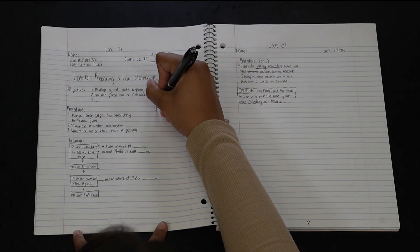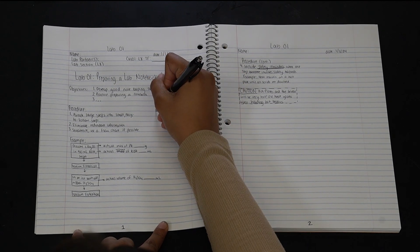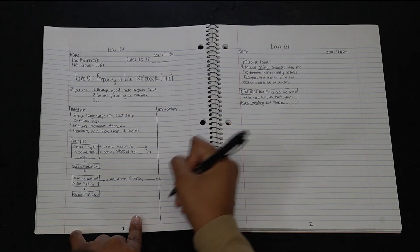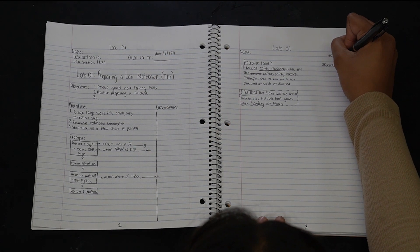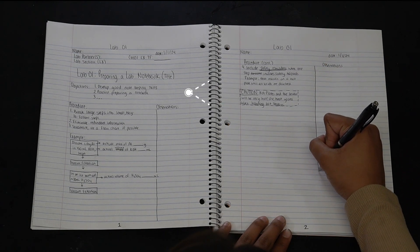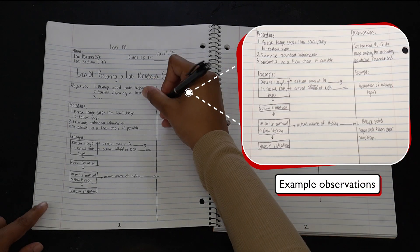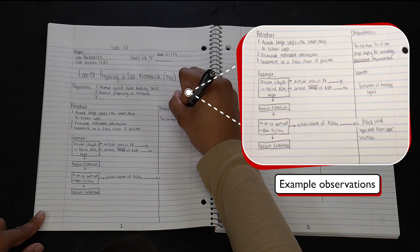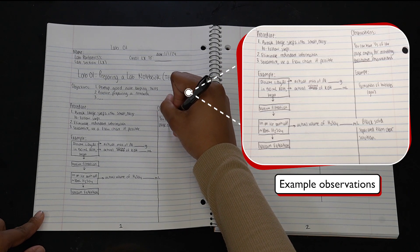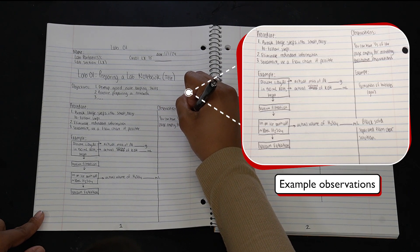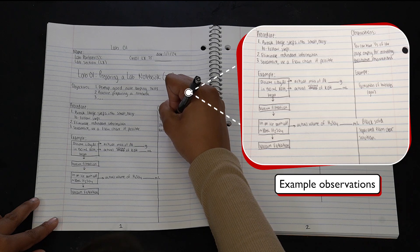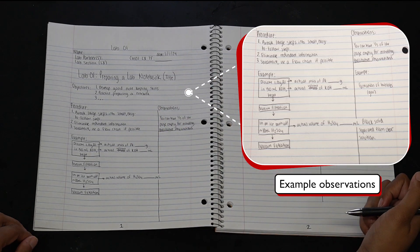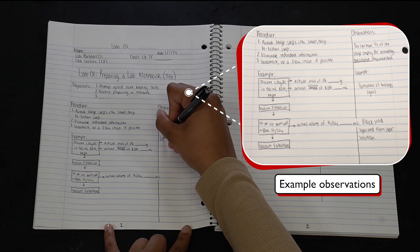After all, knowing that step 5 is dangerous doesn't help you at the end of the experiment. Second, we should reserve ample space for recording observations and measurements at each step. For observations, we can leave some empty space after each step, or alternatively design about one third of the page for observations, so as we are following along the procedure during the experiment, we can record the observations next to the step that it correlates to.